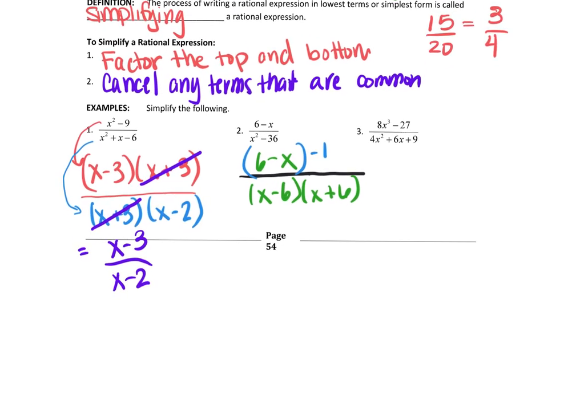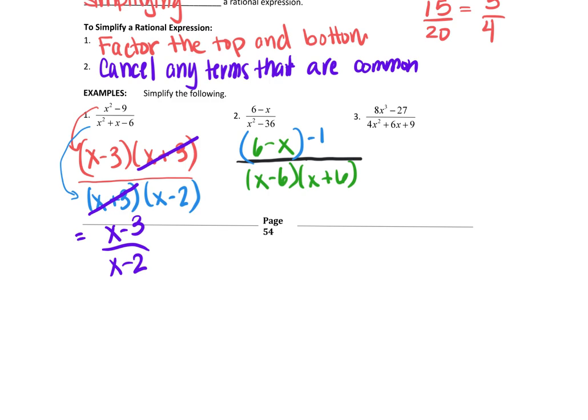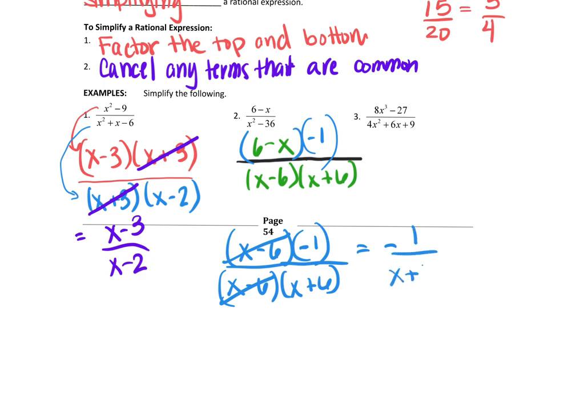Because multiplying by the negative 1 now makes this x minus 6 over x minus 6 times x plus 6. So what you have now is you have a negative 1 that you've multiplied by here. And so essentially, these are going to cancel now, and you're left with just a negative 1 over x plus 6.